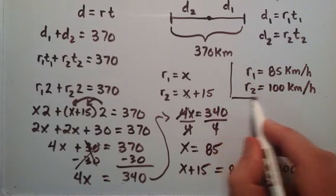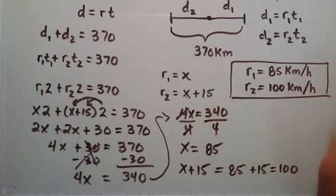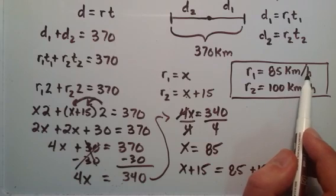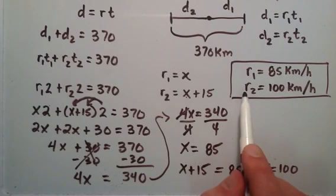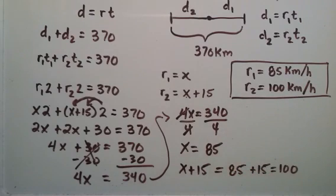So that's our answers. Car 1 was traveling at 85 kilometers per hour and car 2 is traveling at 100 kilometers per hour.